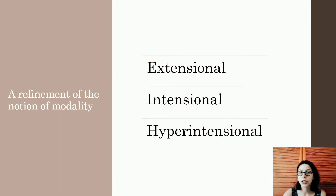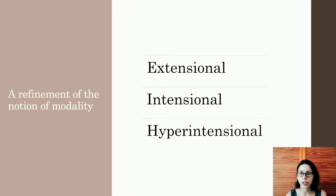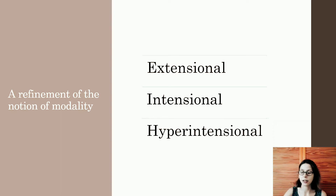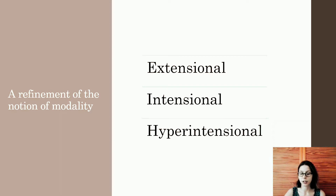In an extensional context, exchanging two arbitrary sentences with the same truth value — that is, the same extension — leaves the construction invariant. Standard classical logic and classical semantics creates an extensional context. By intension, on the contrary, we mean truth value in the same set of possible worlds. So two sentences that have the same intension have the same truth value in the same possible worlds. And in an intensional context, exchanging two arbitrary sentences with the same intension leaves the construction invariant. Classical modal semantics, for instance, generates intensional contexts.